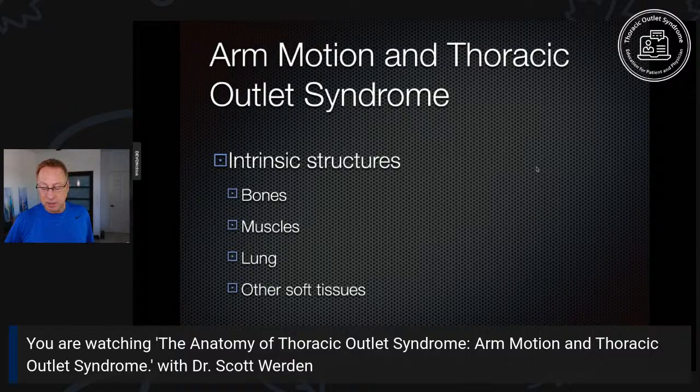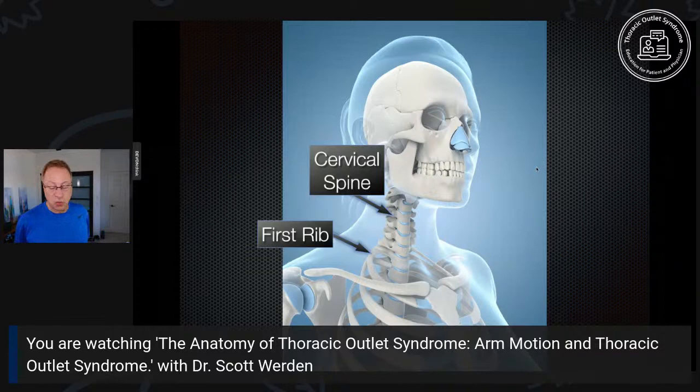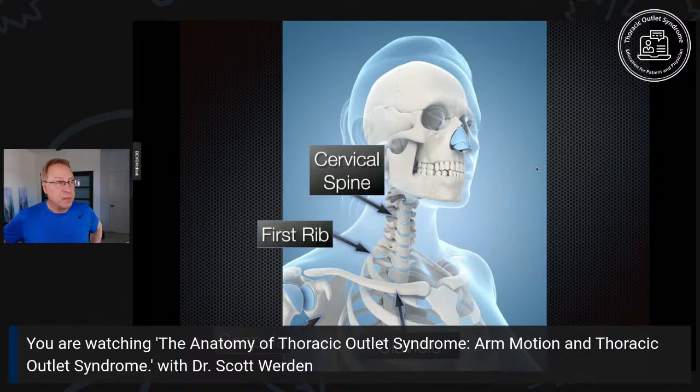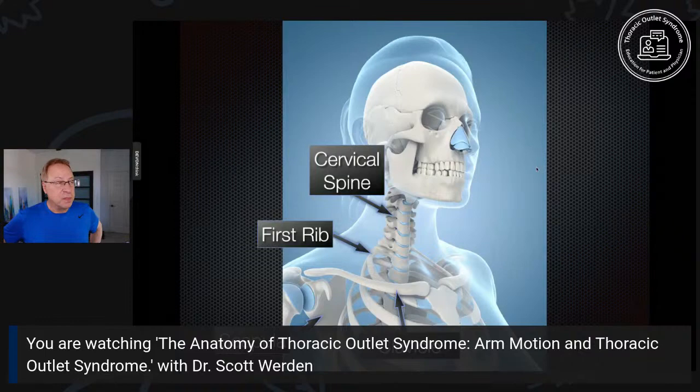Here are the basic bony structures we need to know: the cervical spine or neck; the first rib, at the top of the rib cage; the clavicle, or collarbone; and the scapula, or shoulder blade. We'll talk in particular about the collarbone and the shoulder blade. Don't be confused by these medical terms — I'll try to use plain English terms. Make it easy for all of us.